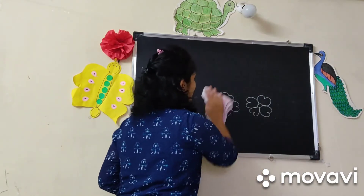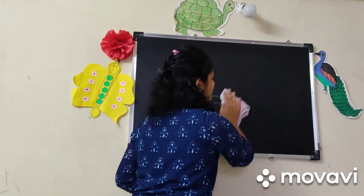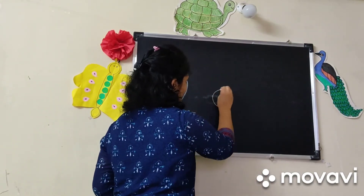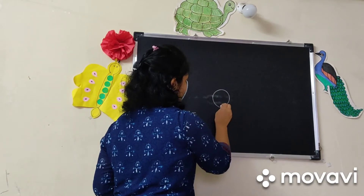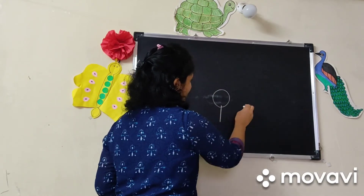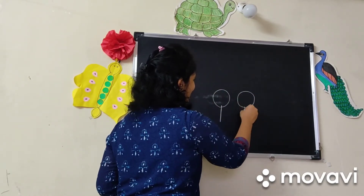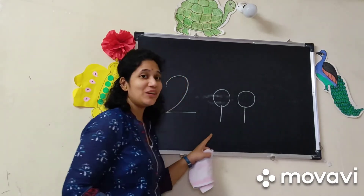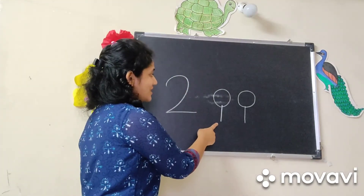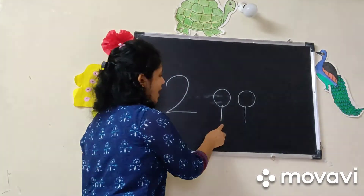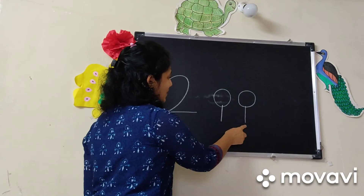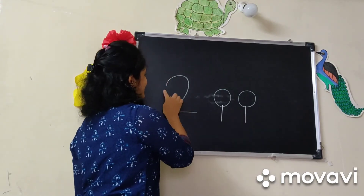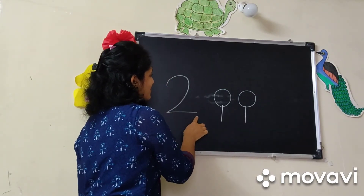Another example is your favorite lollipop. How many lollipops are here? Count it. 1, 2. 2 lollipops. And this is number 2.